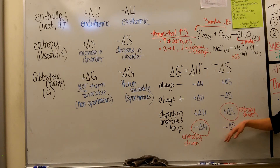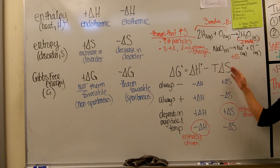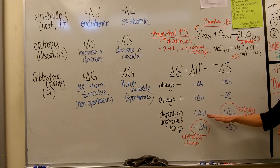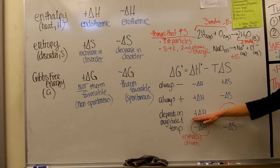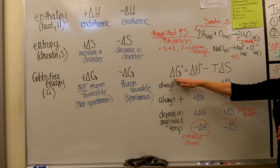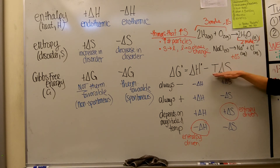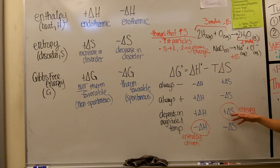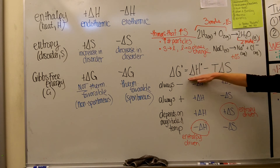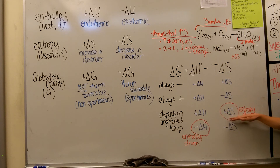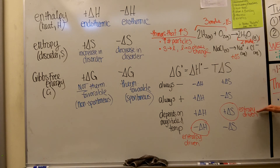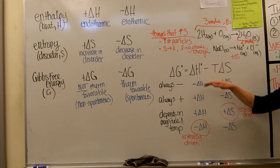There are two other scenarios where favorability depends on the magnitude of the S and H values and the temperature — when both are positive or both are negative. If both are positive, a positive delta H is not favorable since we want G to be negative, but subtracting a positive delta S value is favorable. In order for delta G to be negative, the T times delta S term needs to be larger than delta H. So this scenario is more likely to occur at high temperatures, and we would say it is entropy driven because it's the delta S value that makes it energetically favorable.